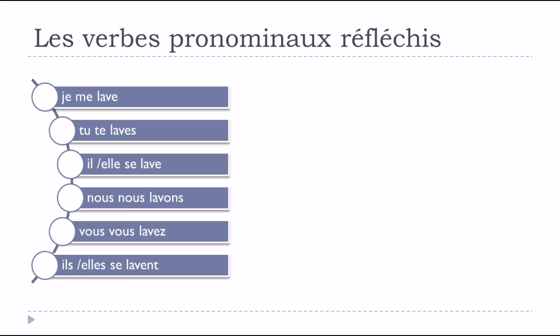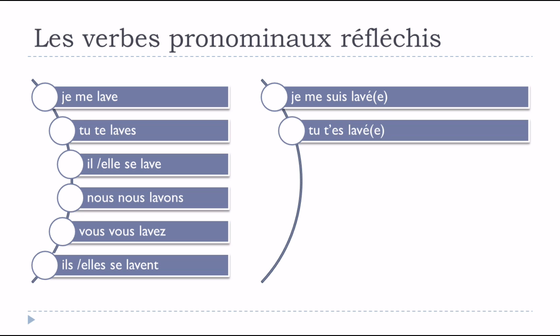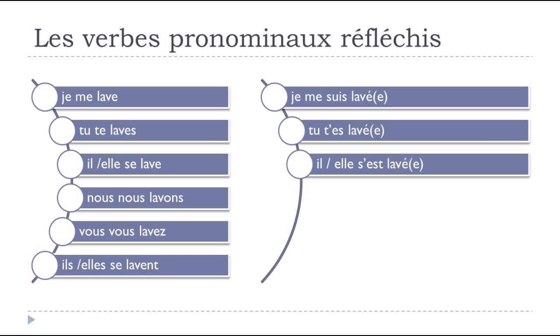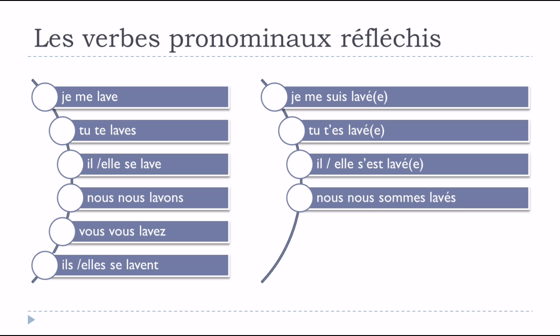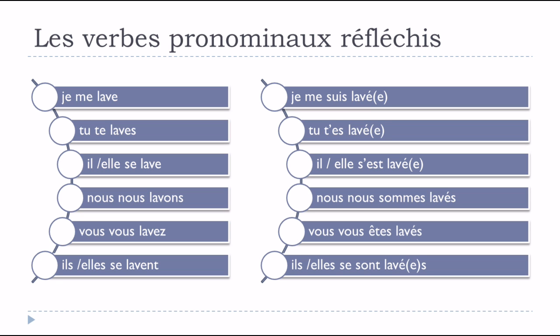Now for the passé composé form: je me suis lavé, tu t'es lavé, il/elle s'est lavé, nous nous sommes lavé, vous vous êtes lavé, ils se sont lavé, elles se sont lavé. The key point: because this is a pronominal verb, we use être — not avoir — at the passé composé.